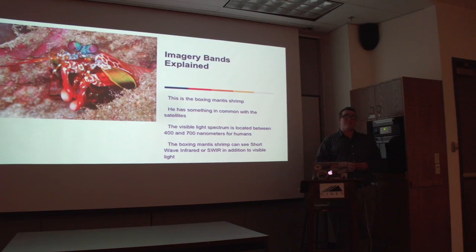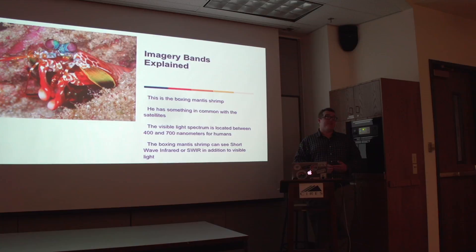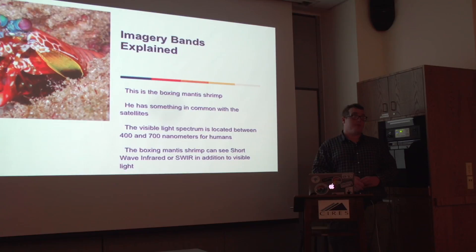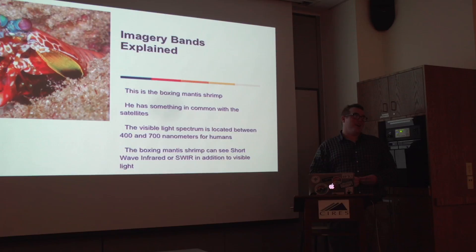The human eye is sensitive to light anywhere between 400 and 700 nanometers — 400 for violet and 700 for red. The shortwave infrared is anywhere from 1500 to 2500 nanometers. What this boxing mantis shrimp has in common with the ASTER and Digital Globe satellites is that it can see all sorts of bands of radiation, including shortwave infrared, which is really amazing. However, we can't extract data from a boxing shrimp — we could extract a delicious cocktail, but not the information we need.